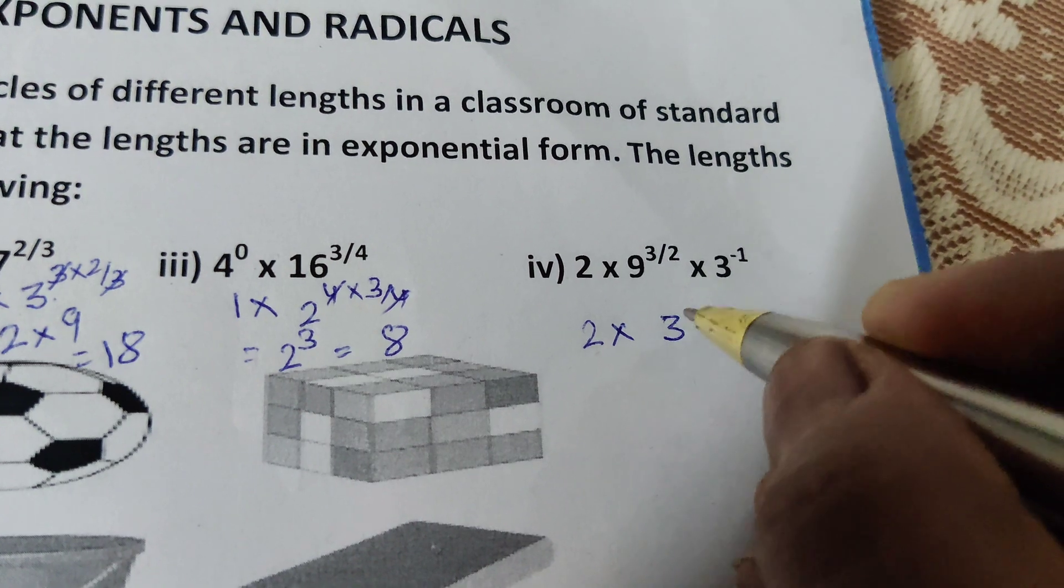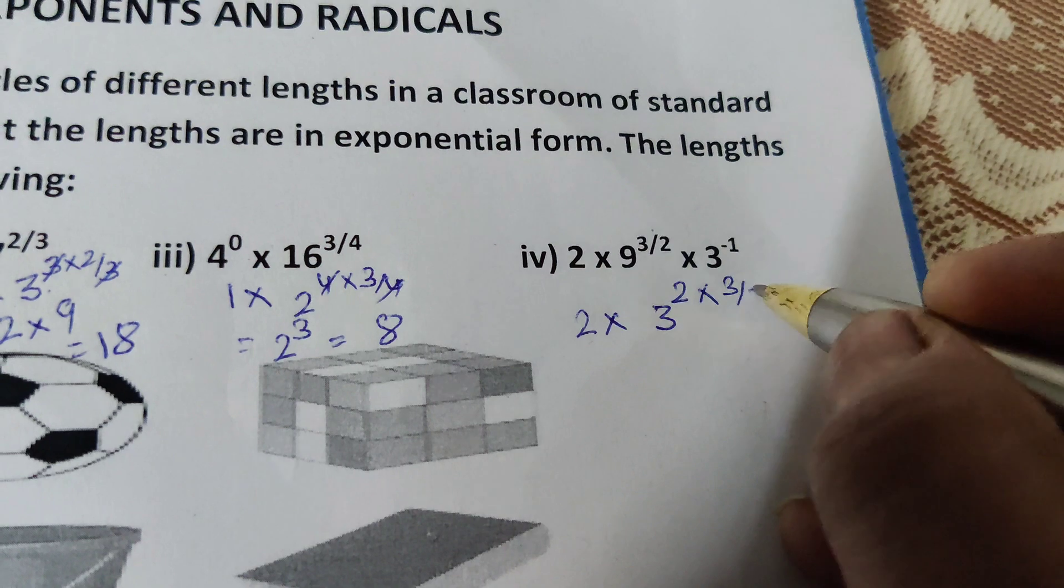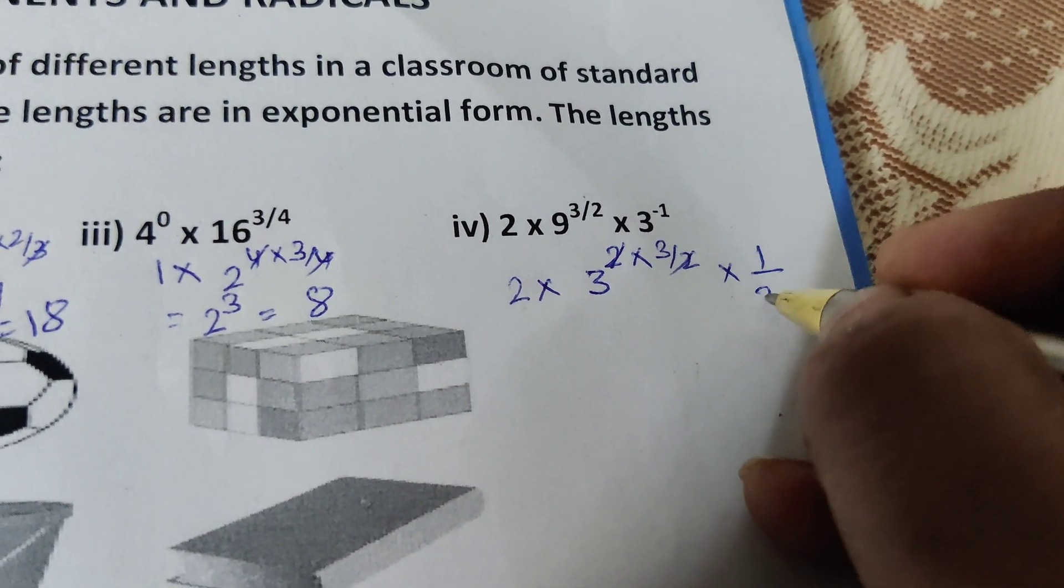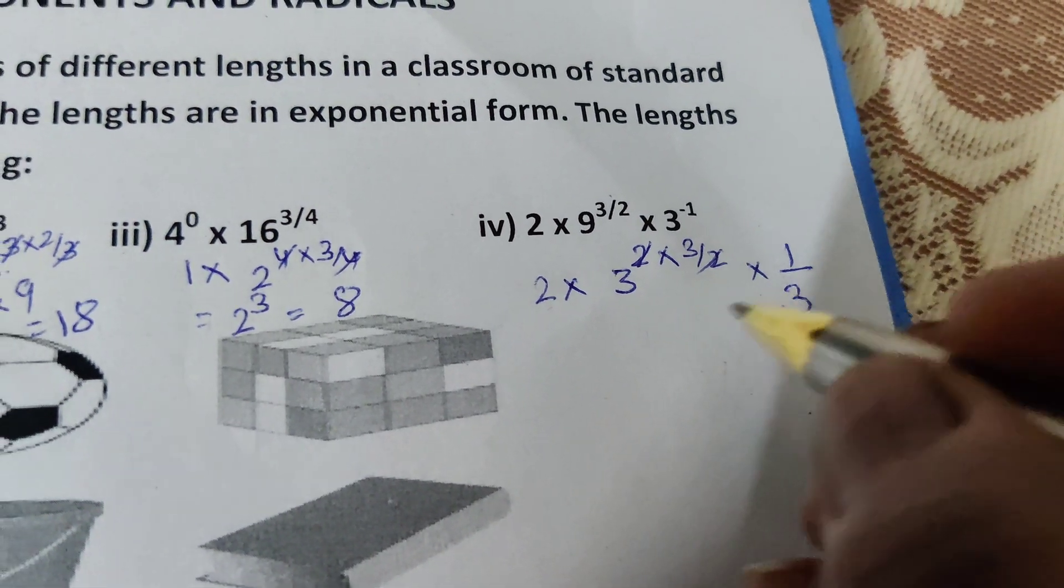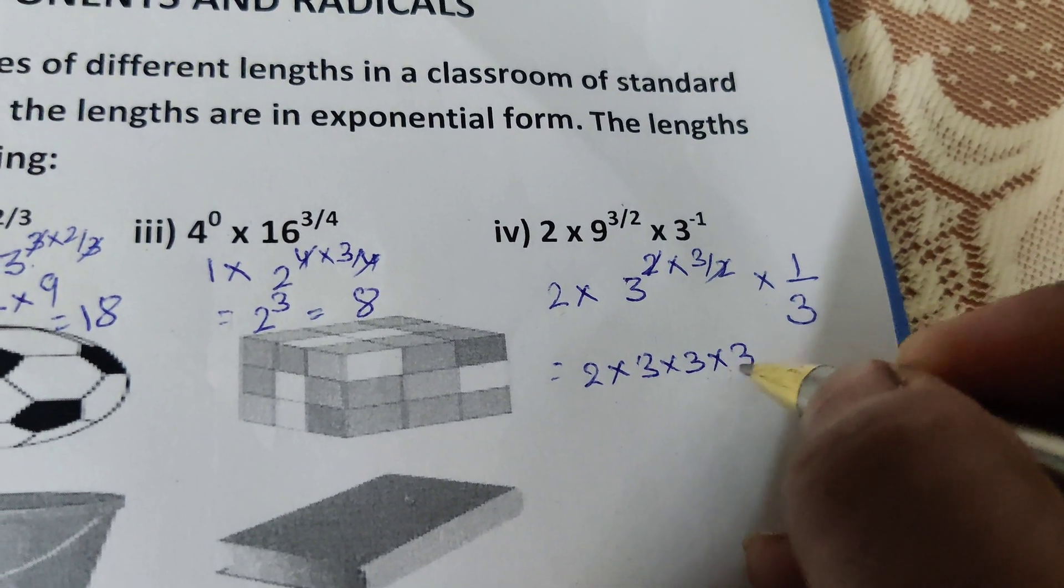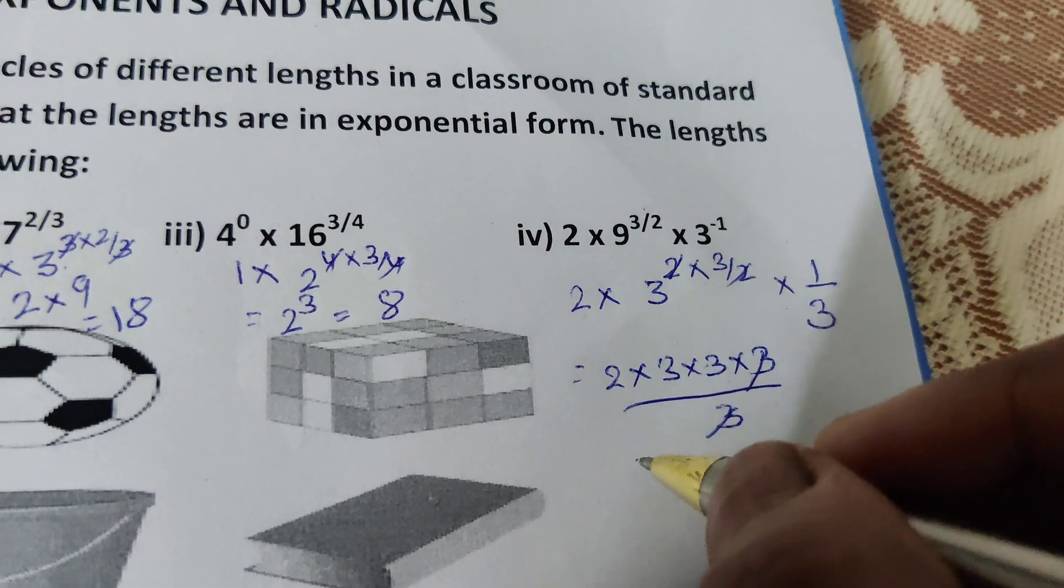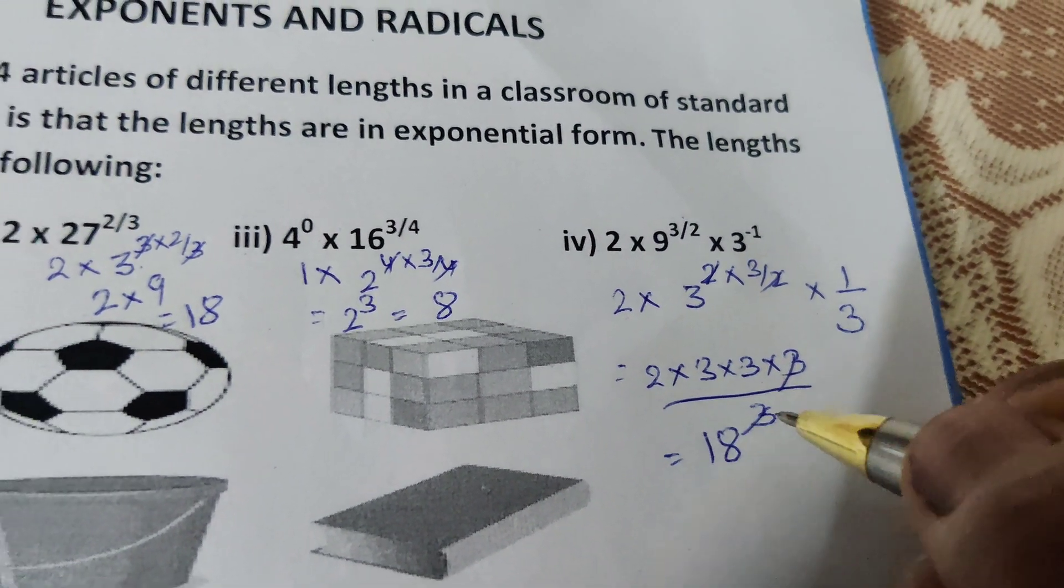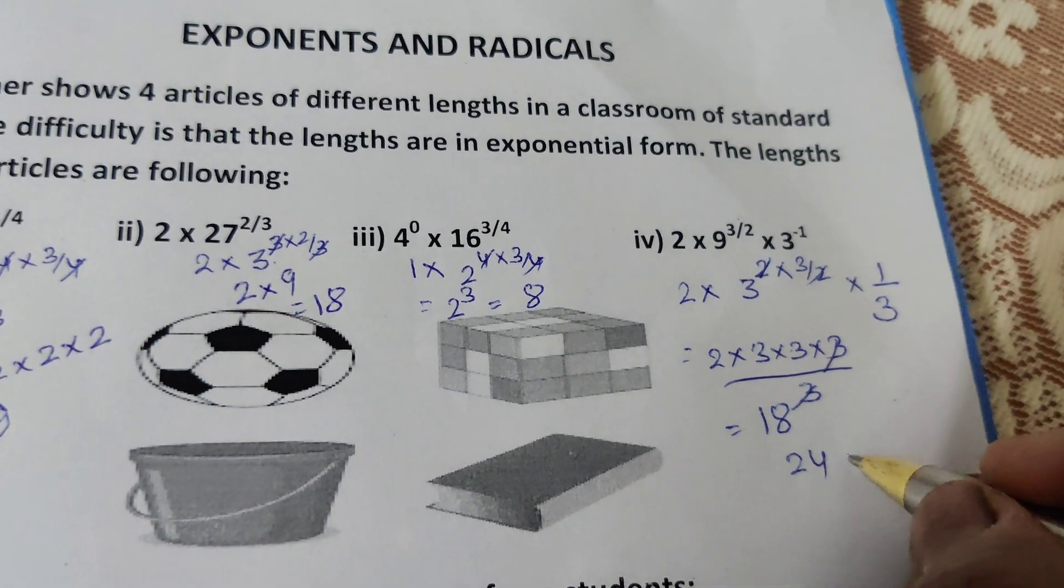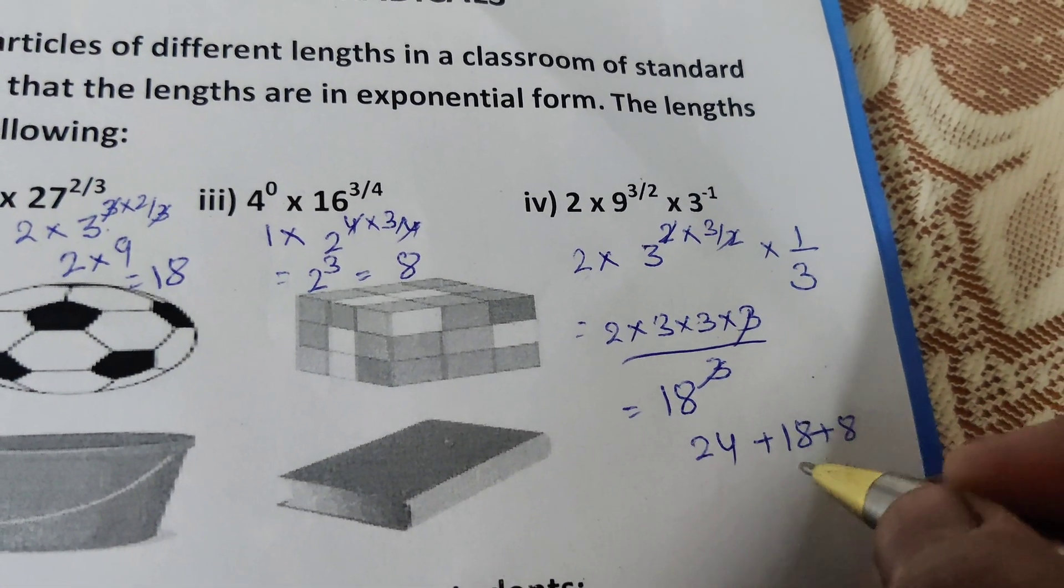And the last, 2 × 9^(3/2), we can write 9 as 3^2 and multiply by the power 3/2, cancel. 3^3 × (-1), minus 1 means 1/3. 2 × 3^3, we can write 3^3 like this and divide by 3, cancel, 3 × 3 = 9 × 2 which equals 18. The sum of all the lengths. So now add 24 + 18 + 8 + 18.